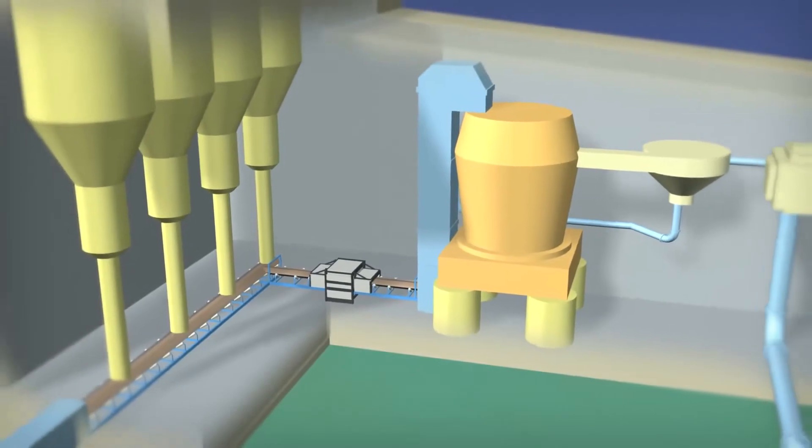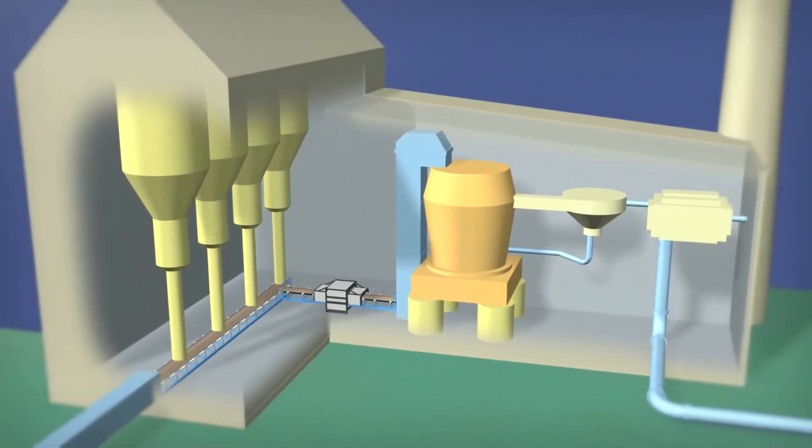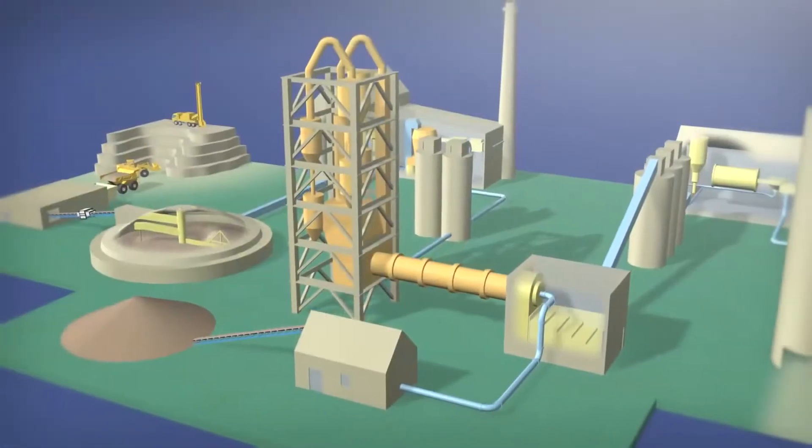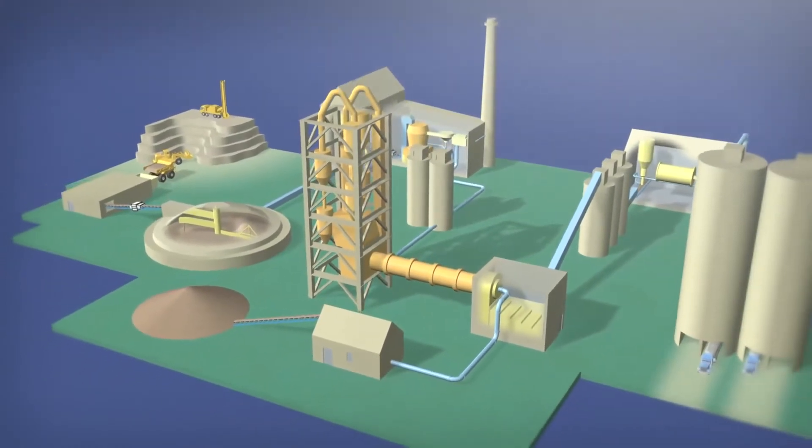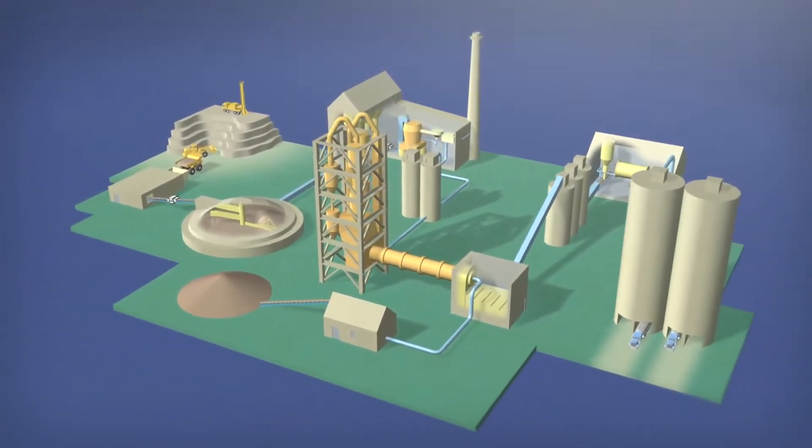It is well known in the industry that well-controlled kiln feed chemistry with low variability has lower energy requirements and creates stable operating conditions.